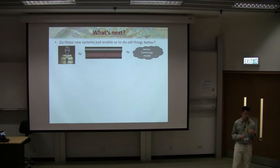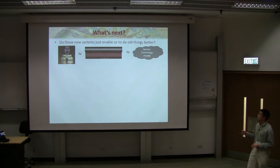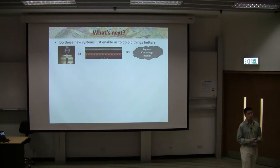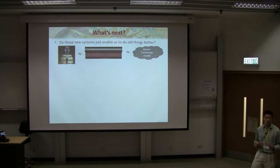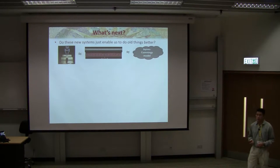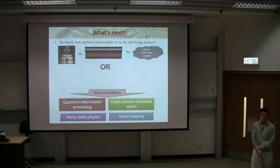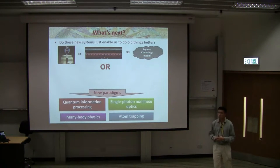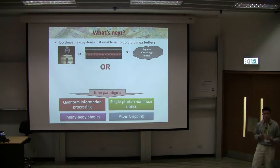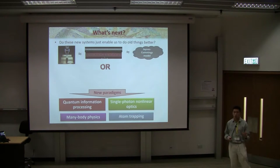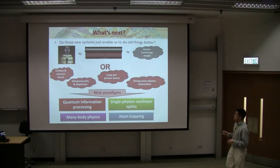These experiments have been around for two or three years and represent a really exciting development for atomic physics. When this field started, the game was to do all things better — moving from big Fabry-Perot cavities to small photonic crystal cavities. Originally the line was that a cavity is a cavity, described by the Jaynes-Cummings model, which is exactly solvable and well-studied. But the interesting story is that when you trap atoms close to nanophotonic systems, it's not just doing old things better — there's really a lot of new physics that can open up, with new paradigms for quantum information processing, many-body physics with atoms, and atom trapping.